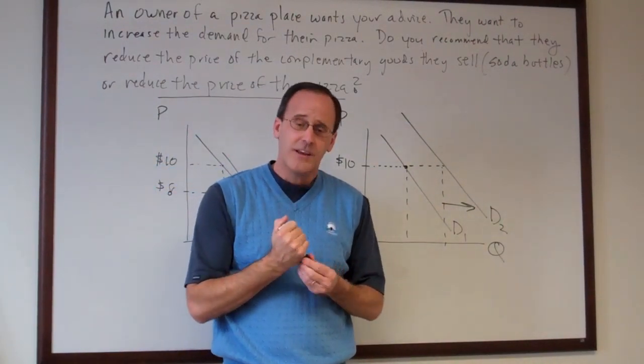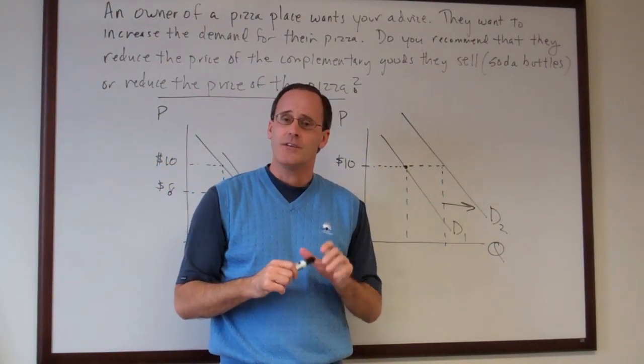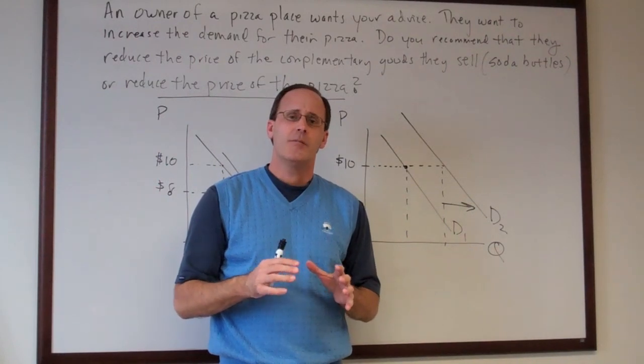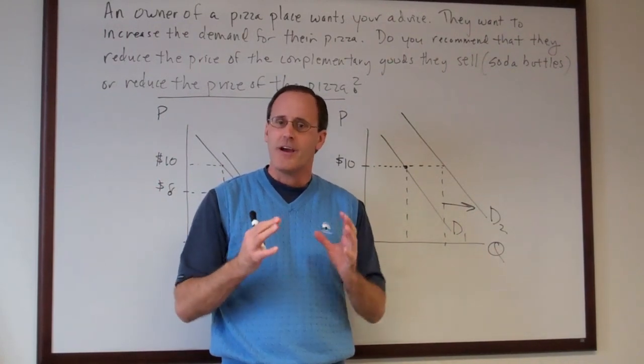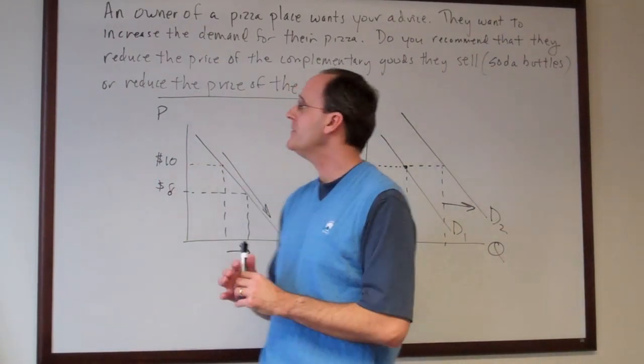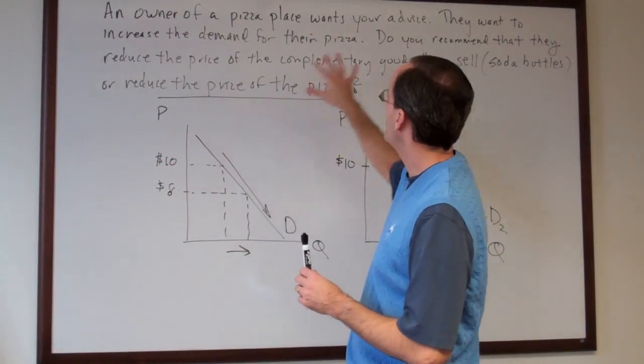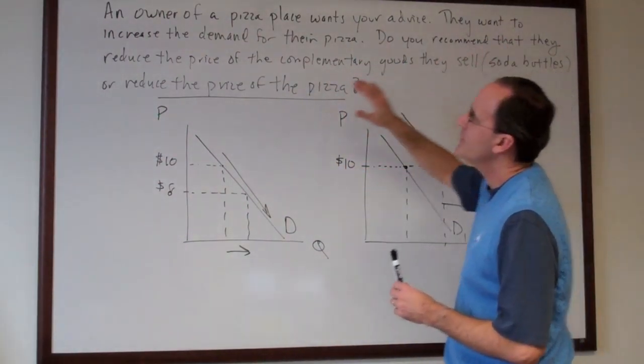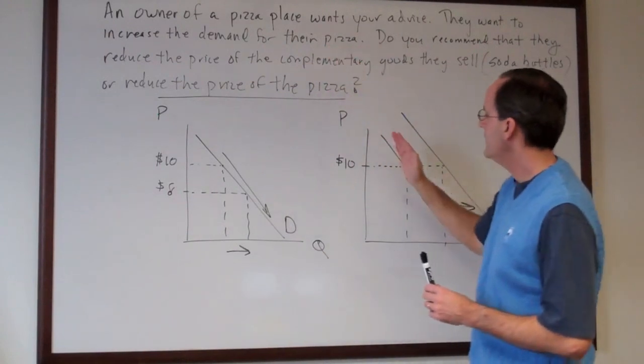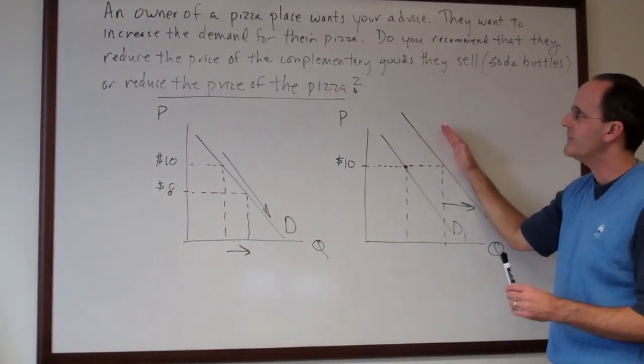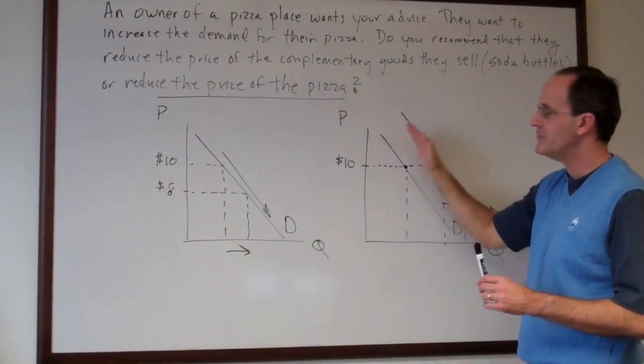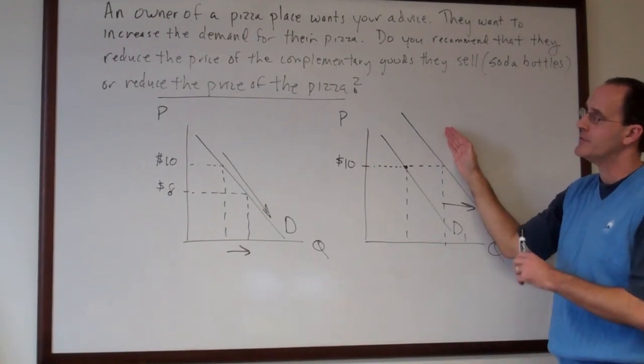And the reason why I went through this is it's often times very difficult as a new student of economics to kind of get what economists are asking in questions. And so you have to pay a lot of attention to what the question asks. If they want to increase the demand for their pizza, we want the demand curve to shift. Complementary goods can shift the demand out if you reduce the price.